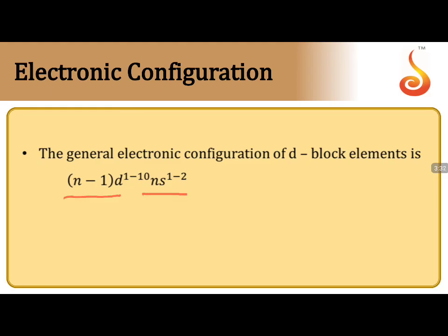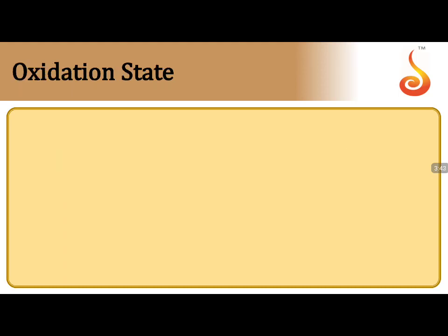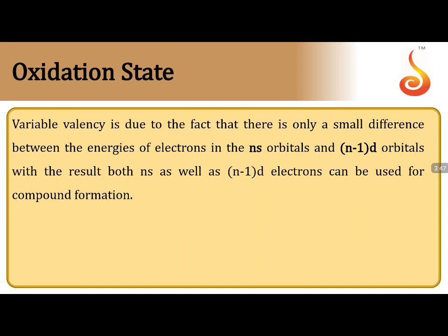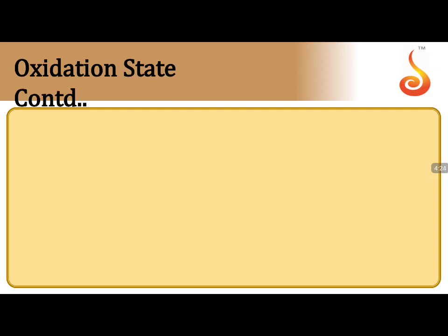The general electronic configuration is (n-1)d¹⁻¹⁰ ns¹⁻². In exceptional cases ns can come to zero, particularly like palladium which shows a pseudo-noble gas configuration in the ground state. Regarding oxidation states: the ns orbitals and (n-1)d orbitals have very little energy difference between them, so both sets of electrons participate in chemical bond formation. Therefore, transition elements exhibit variable oxidation states.